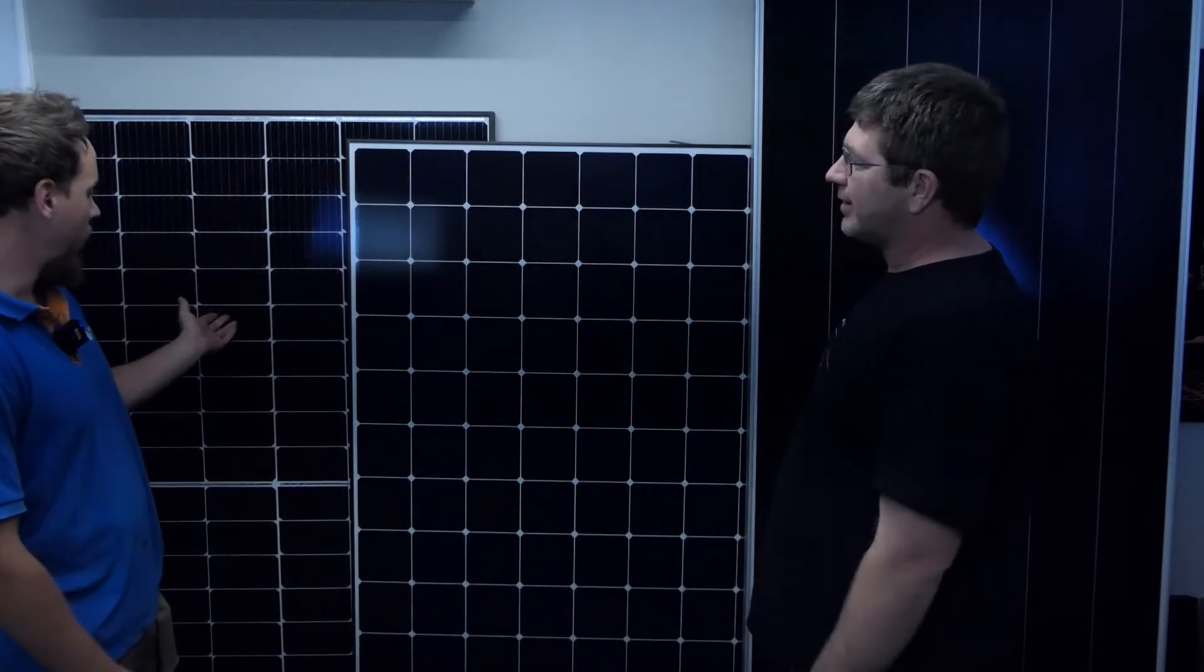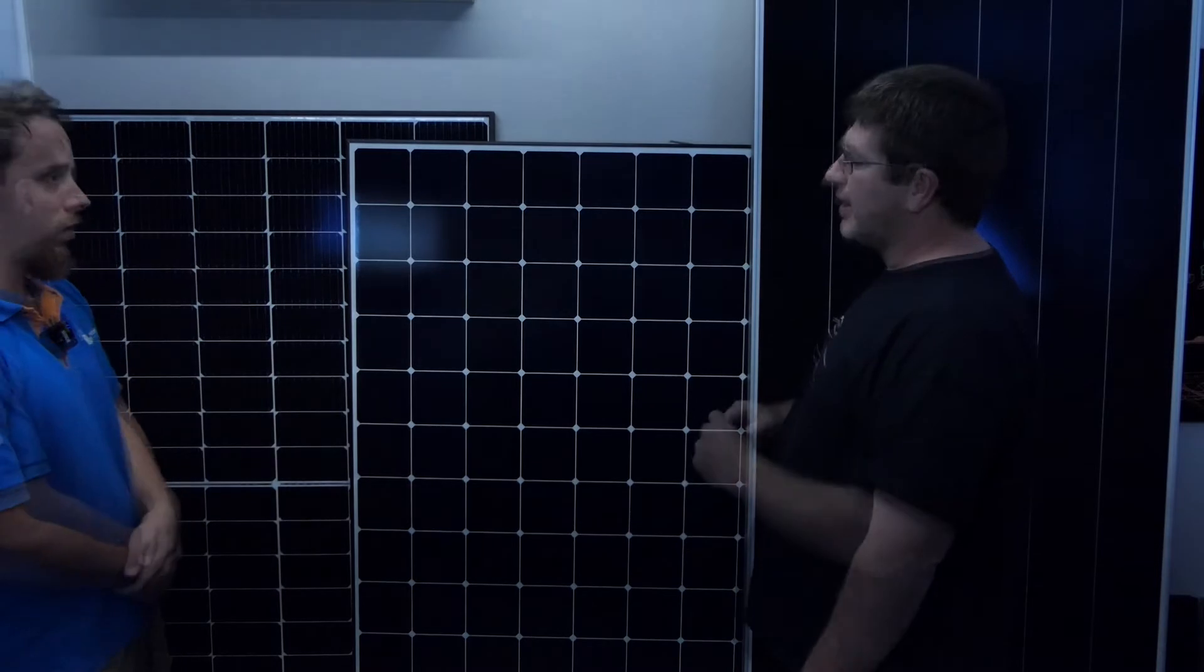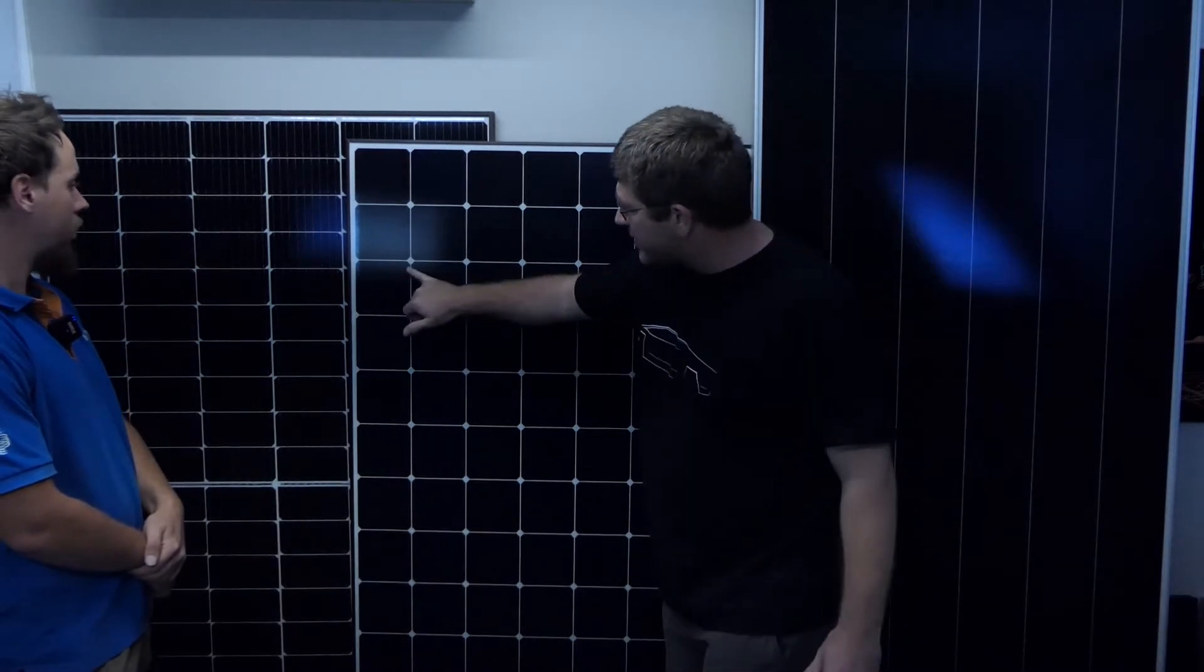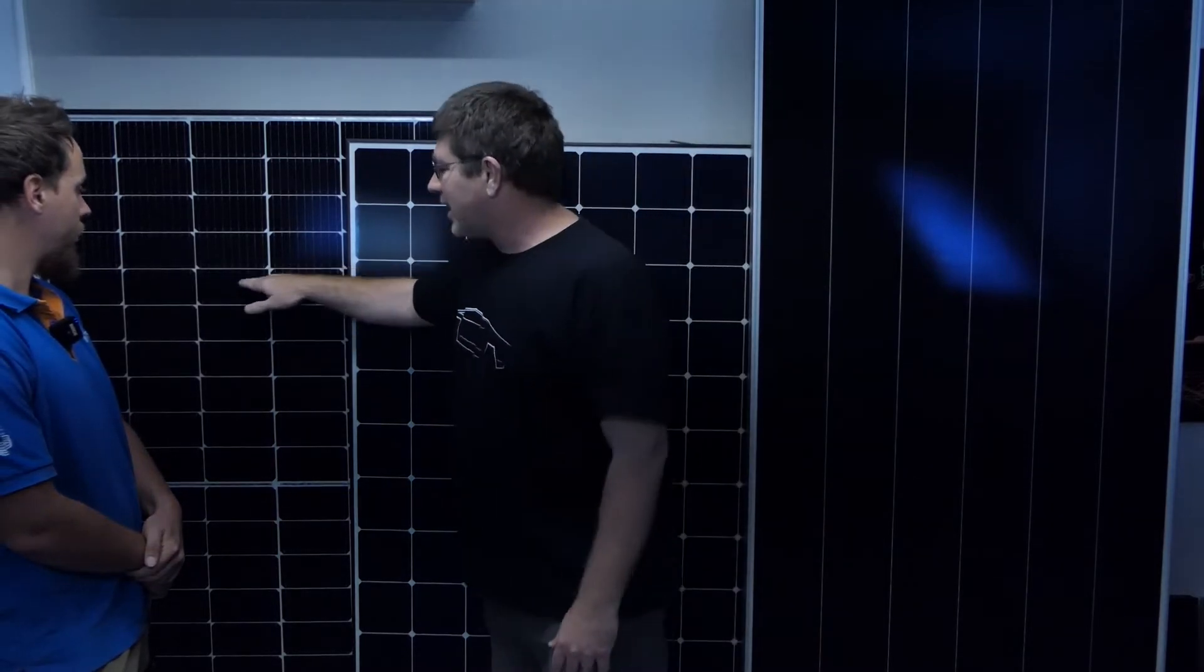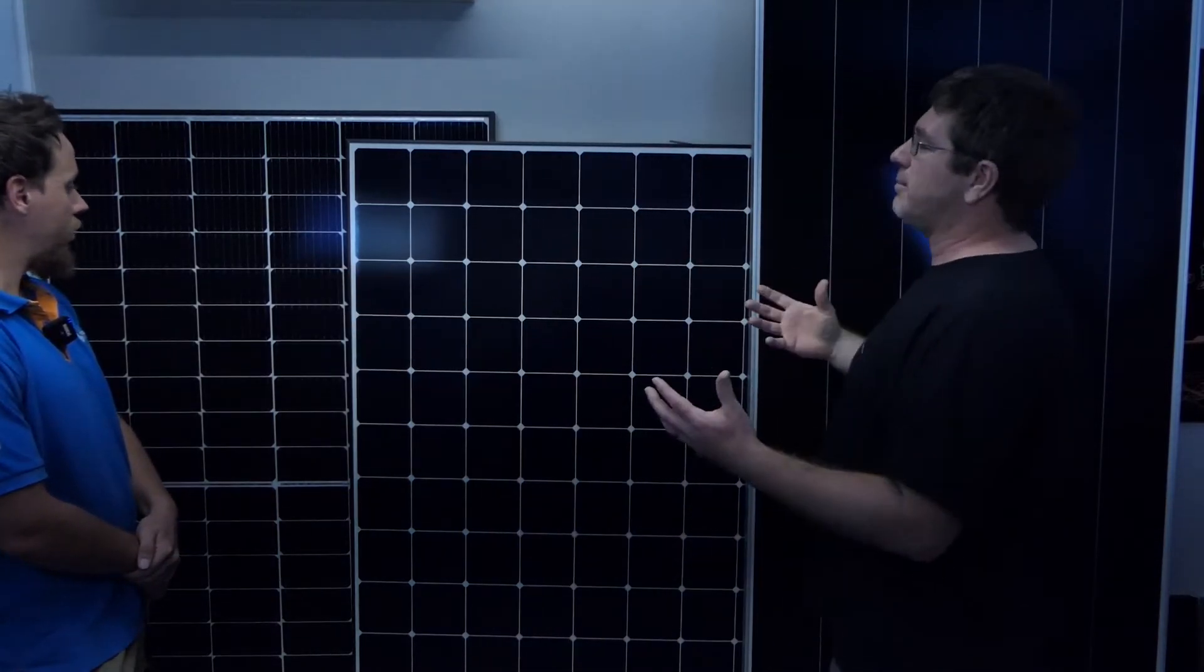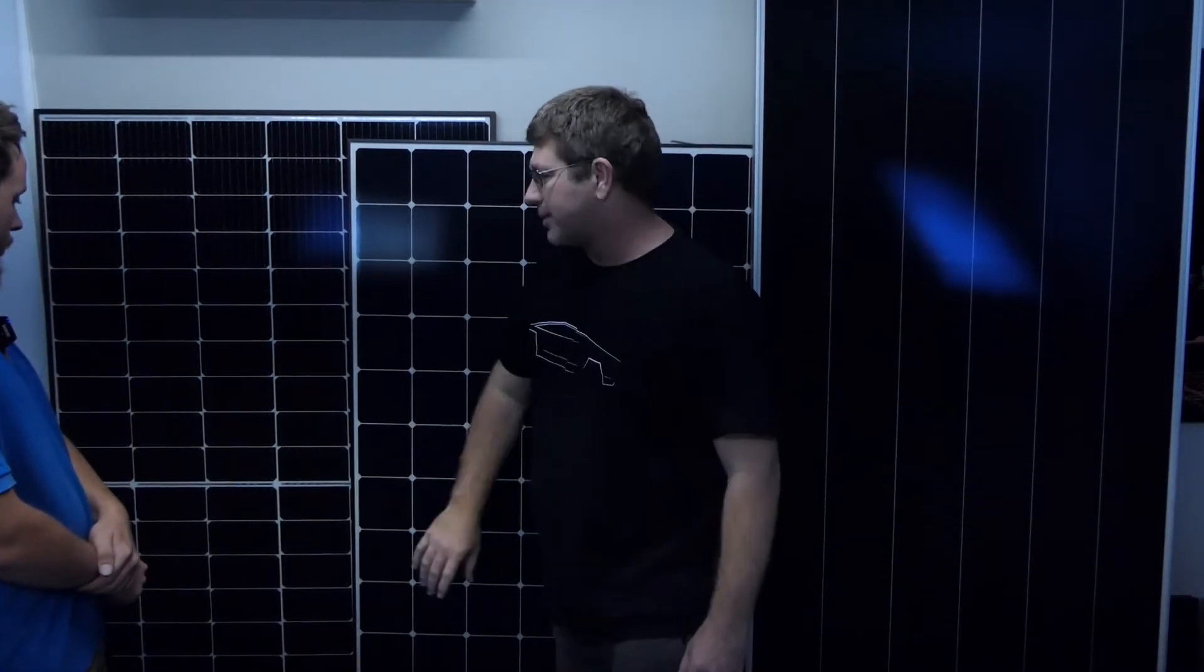So the first panel we got here is an REC panel. What technology does this panel use? It's a 120 cell half-cut cell. So if you actually have a look at the SunPower here, it's a full cell, where this one here they've actually cut it in half. And REC call it their twin peak. So basically it's twin peak, so it's two panels. So one panel up the top, one panel down the bottom.